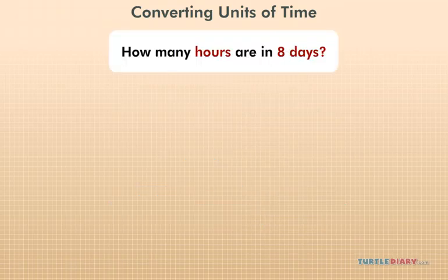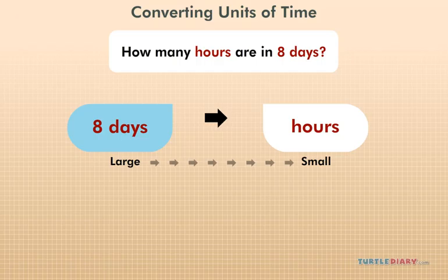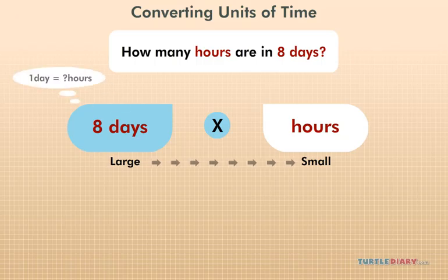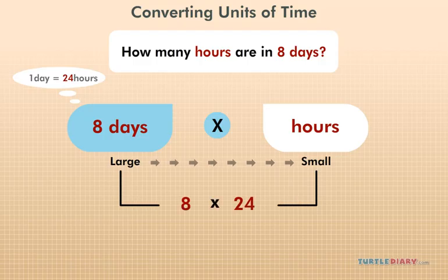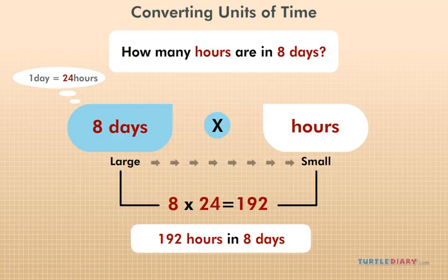Example: How many hours are in eight days? We want to convert eight days into hours. Days are larger than hours, so since we are going from large to small, we must multiply. To determine what to multiply by, think about how many hours are in a day. There are 24 hours in a day, so we will multiply 8 by 24. 8 times 24 equals 192. There are 192 hours in 8 days.